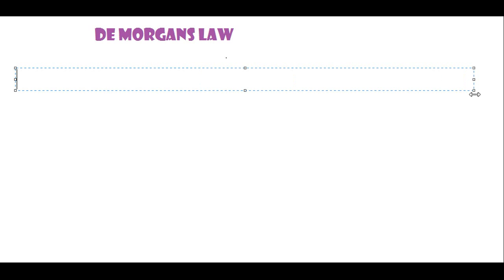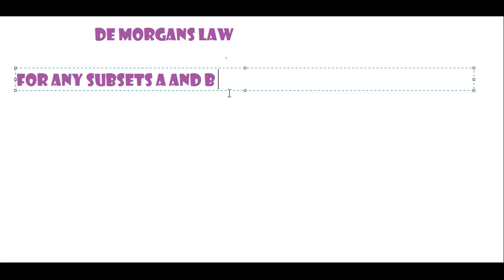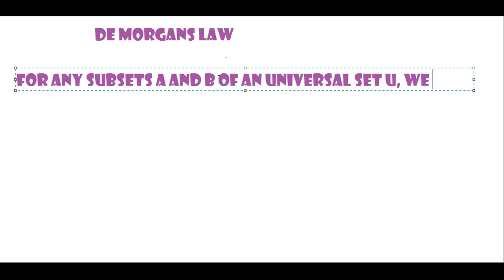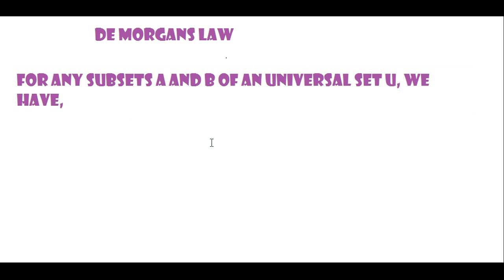Today we will learn what is De Morgan's Law and how to remember it easily. De Morgan's Law — for any subsets A and B, let A and B be subsets of the universal set U. So we have, number one: